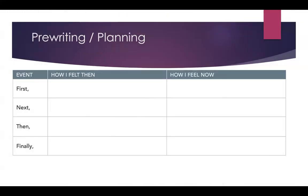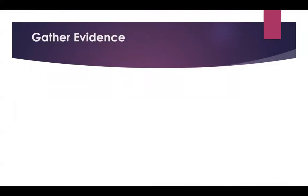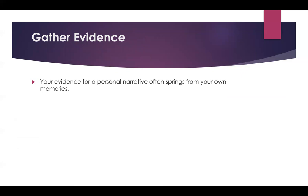When you plan your writing, you can follow this organizer. For example: first, something happened — how I felt then, how I feel now about it — and after that, next, then, and finally. Have this draft for yourself to make it easier to write your narrative and connect the past with the present. Then gather evidence. Your evidence for a personal narrative often springs from your own memories — it can be something simple or something complicated. It is just from you.